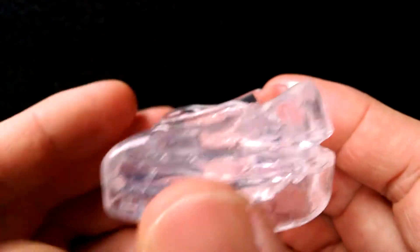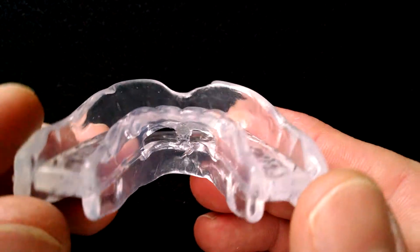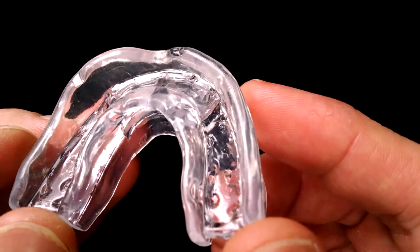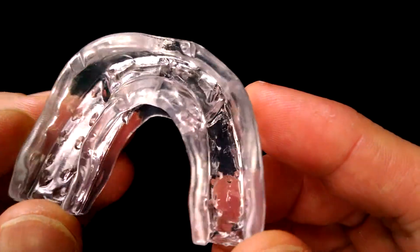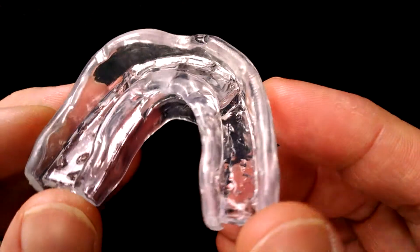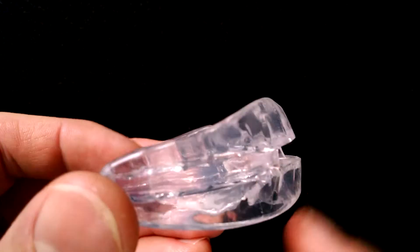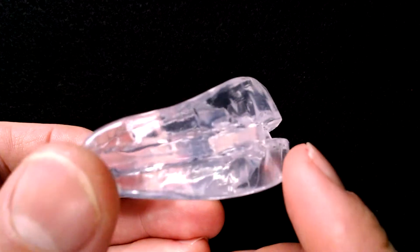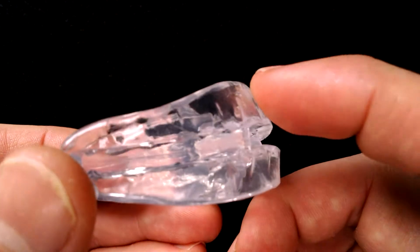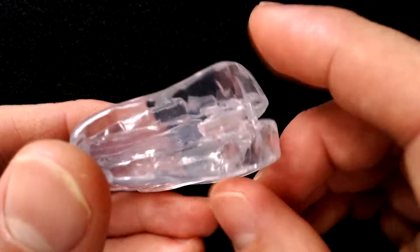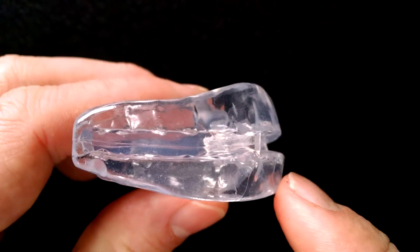The Rip Snore is a boil and bite mandibular advancement device. You can see this one has actually already been boiled and I actually use this one, and what it does is it actually holds the lower jaw forward. You can see here that the lower tray is slightly in front of the upper tray. By holding the lower jaw forward you tighten the airway and that's what prevents the snoring.